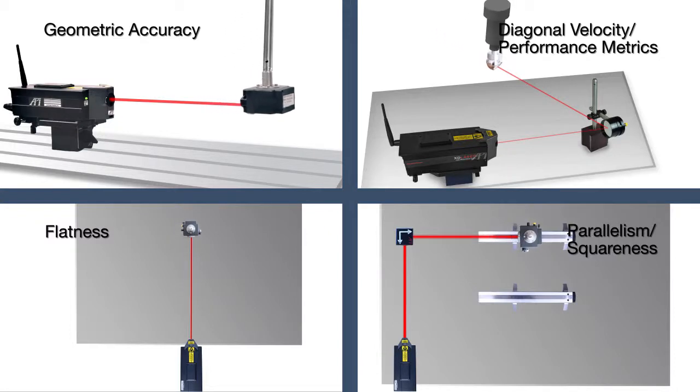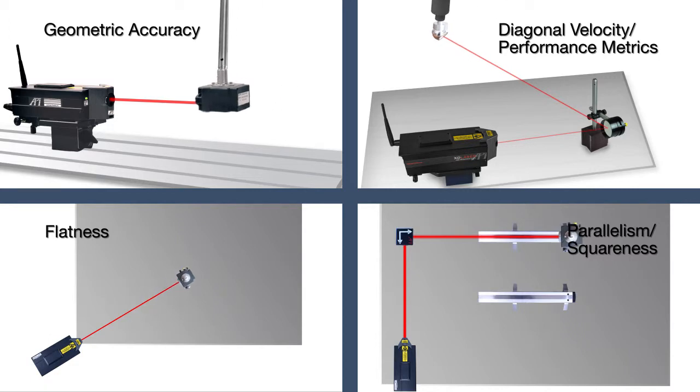With one XD, you can measure for geometric accuracy, diagonal velocity and performance metrics, flatness, parallelism and squareness, and more.